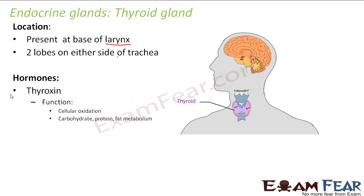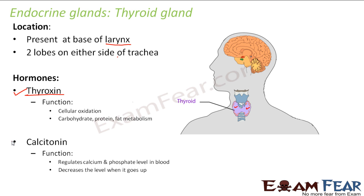The thyroid gland secretes two hormones: thyroxin and calcitonin. Thyroxin helps in cellular oxidation and also helps in carbohydrate, protein, and fat metabolism. Cellular oxidation is very important for survival — each cell performs oxidation to produce energy needed for its survival and growth. Thyroxin helps maintain the best balance for overall growth by metabolizing carbohydrates, proteins, and fats.